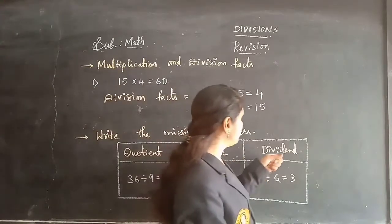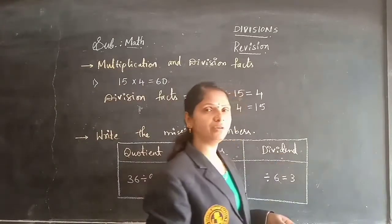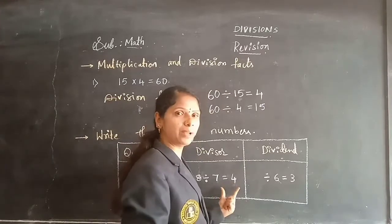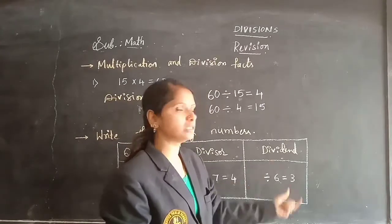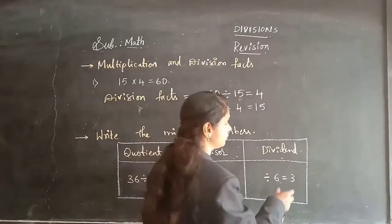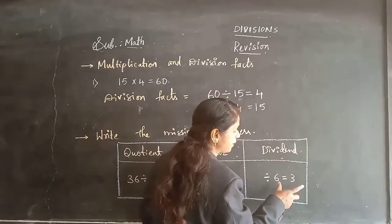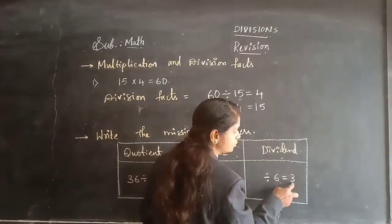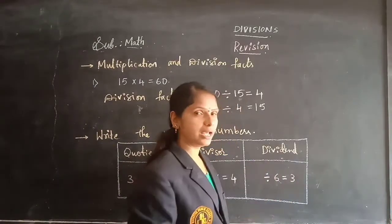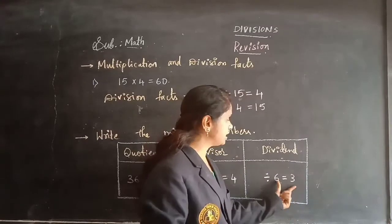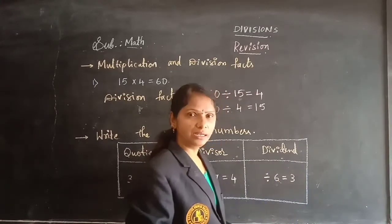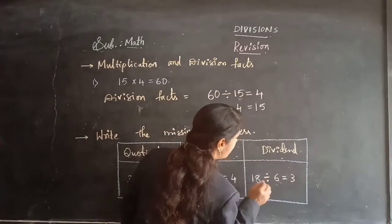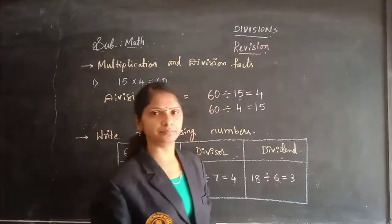Next, we need to find the dividend. To get the dividend, you need to multiply the divisor number and the quotient number. Here, 6×3=18, so you need to write the dividend number as 18.